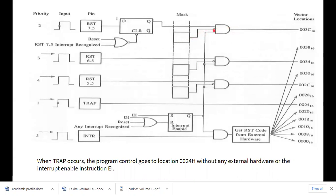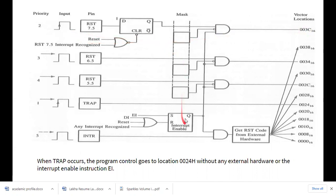For RST 7.5, 6.5, and 5.5, they are connected through a masking device. If you place a one in that logic, the AND gate output becomes zero due to the inverted bubble, meaning the interrupt is blocked from reaching the vector location — it is temporarily masked. Since TRAP has no such device, it goes directly and executes.